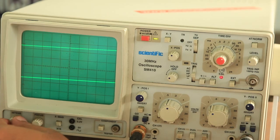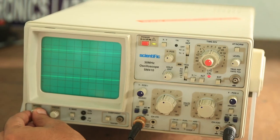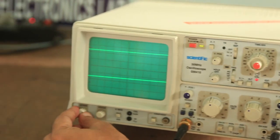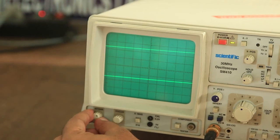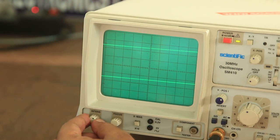Now come to this knob. This is an intensity knob. As you can see, the intensity is increasing and decreasing as we move this knob. So in order to see a good picture, we have to adjust the intensity of the lines on the CRT screen.